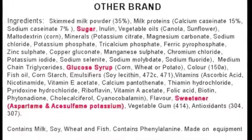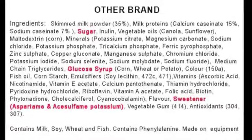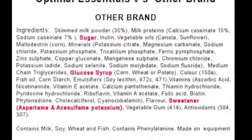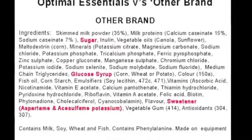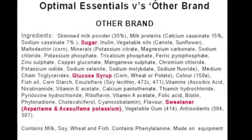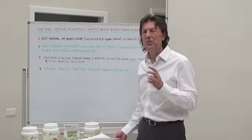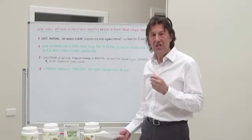Well there's somewhere in the region of five different sugars and artificial sugars, aspartame, sucralose, potassium and phenylalanine and the list goes on. Now all of these artificial sweeteners have a big question mark over them.